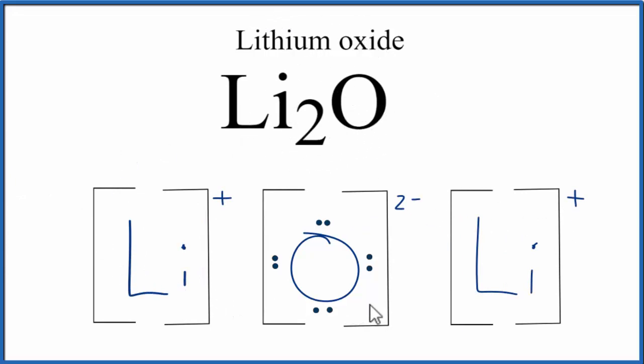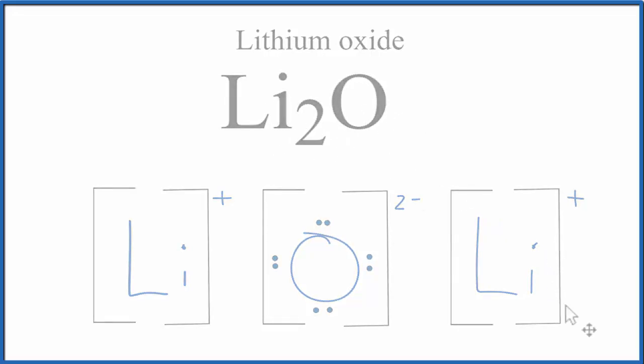Note that this is what we call a formula unit. Lithium 2 oxide is a crystal, and it's made up of a repeating array of these formula units. This is useful to show us how the valence electrons have been transferred to make the ionic compound Li2O. This is Dr. B, and thanks for watching.